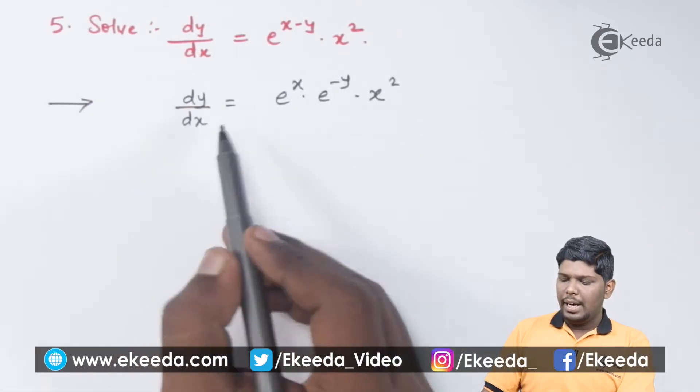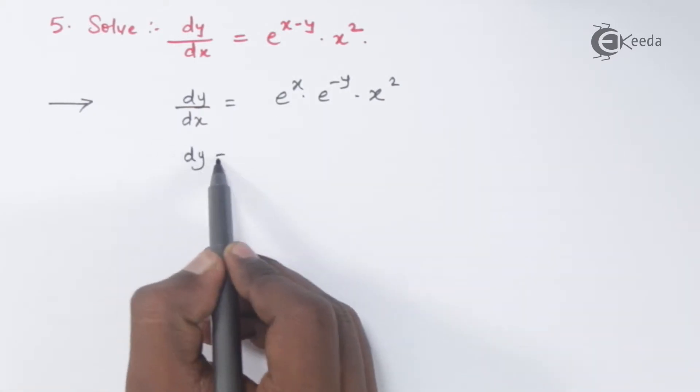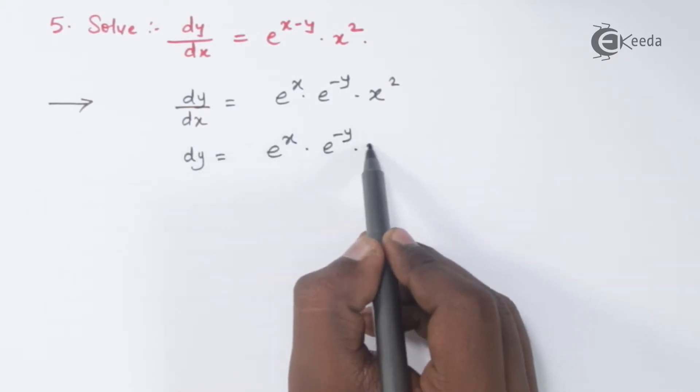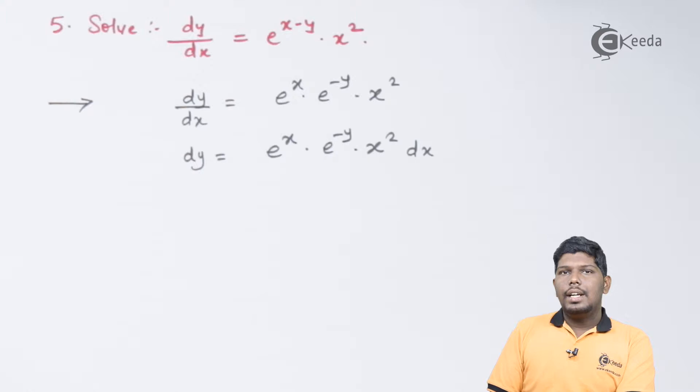After that, we can take dx on the right hand side. Once dy and dx are present in the numerator, the next step is we can separate the variables.